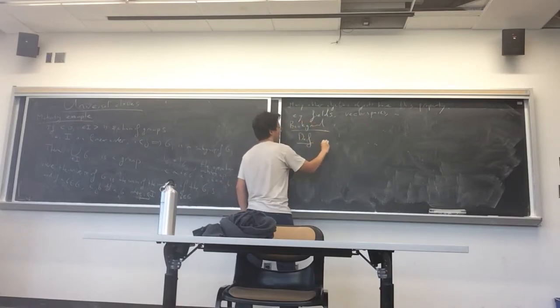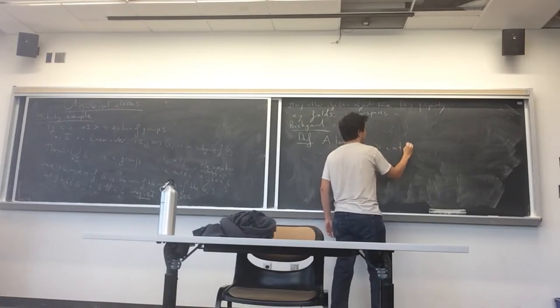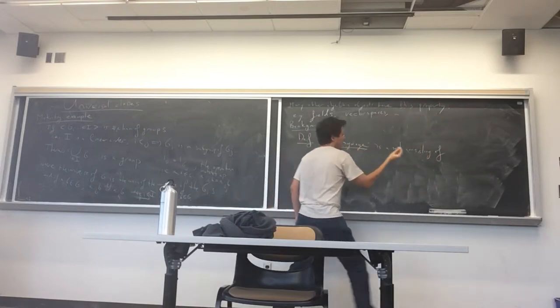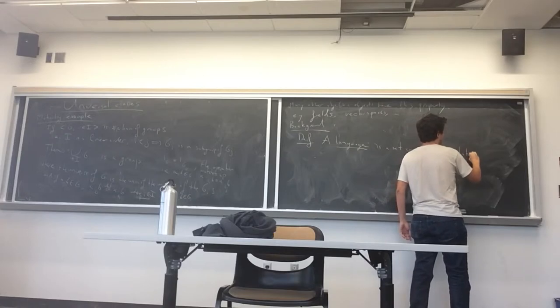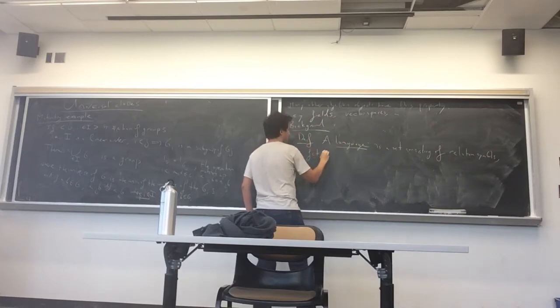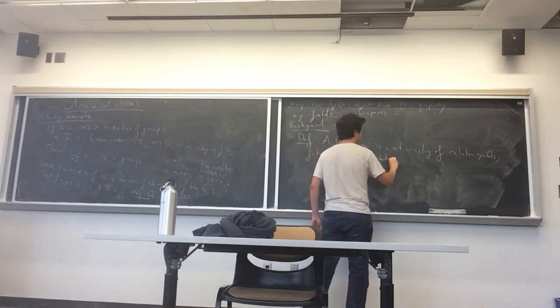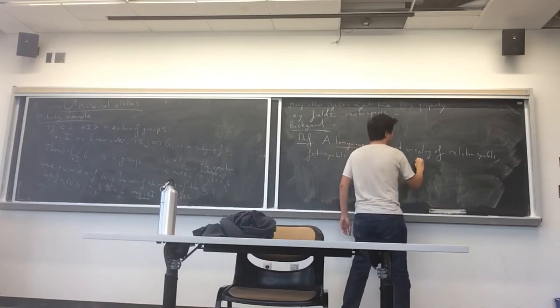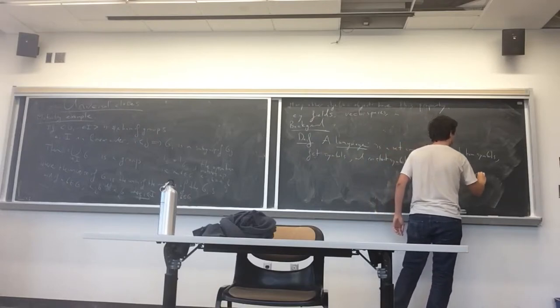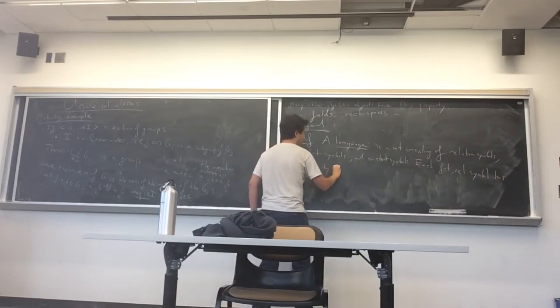So the definition. A language is a set consisting of relation symbols, function symbols, and constant symbols, and I will say what I mean exactly. And to each of these things, each function and relation symbol, it also comes with an arity, a natural number.